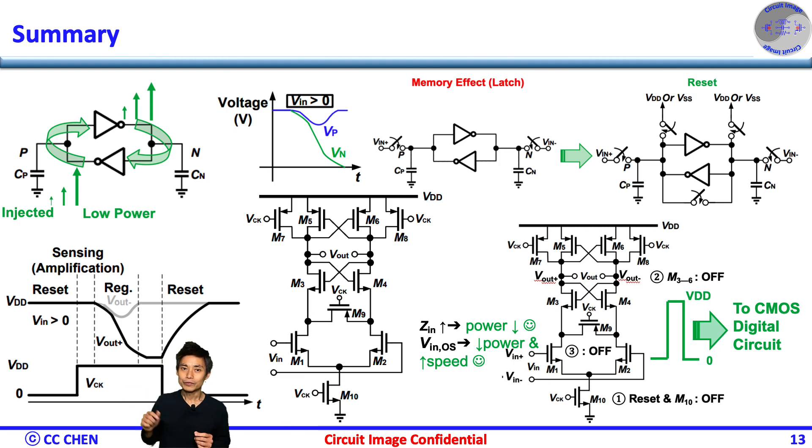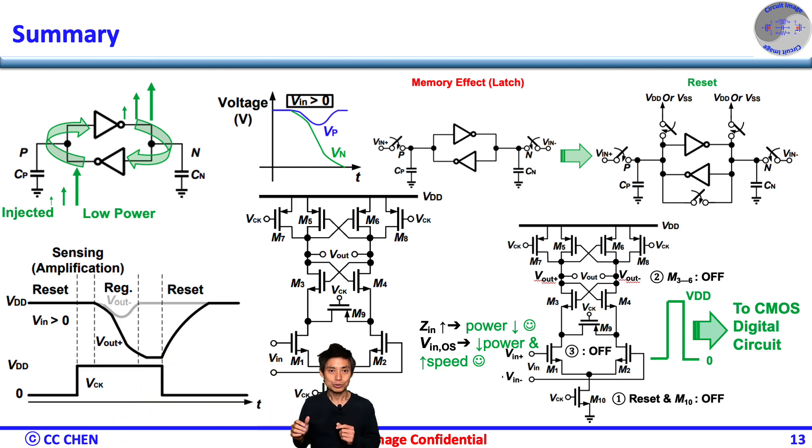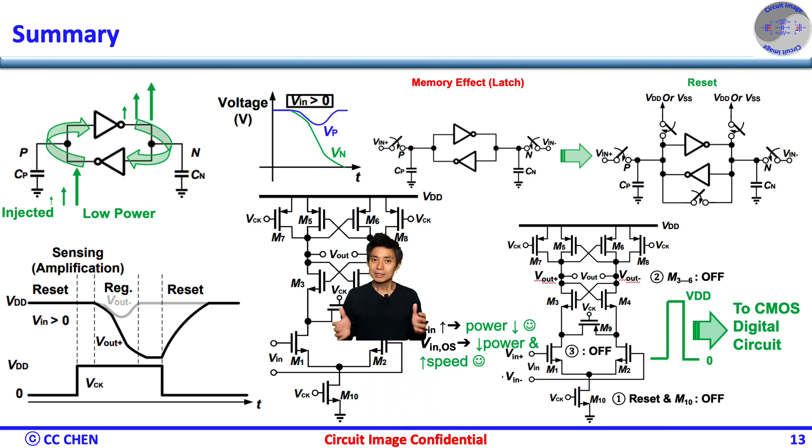Therefore, to fulfill the three phases, reset, sensing, regeneration, we must add a clock control switch at the tail of the input sensing differential pair and stack the latch on top of the differential pair. The remaining reset switches are connected at the output and the drain of the input differential pair. The detail of the topology and operation of the strong-arm latch switch was described.